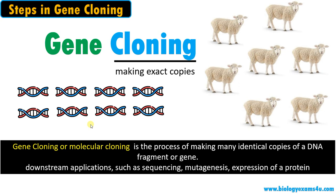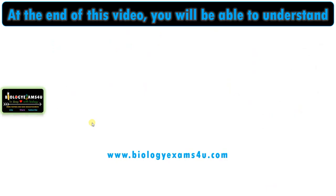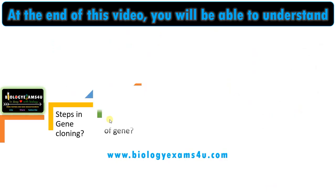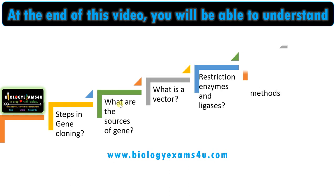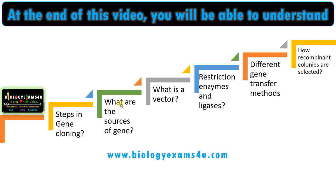It has many downstream applications such as sequencing — if we are studying this gene for the first time, we need to sequence to understand the structure of that gene — then mutagenesis to study the function of that gene, then expression of a protein if that gene is coding some pharmaceutically important proteins like insulin. At the end of this video, you will be able to understand the steps in gene cloning, what are the sources of gene, what is a vector, restriction enzymes and ligases, different gene transfer methods, and how recombinant colonies are selected using antibiotic resistance medium.